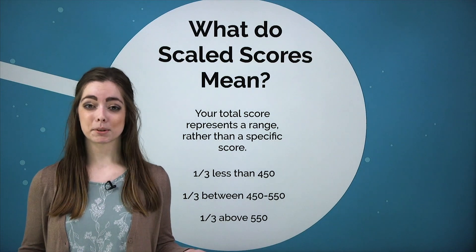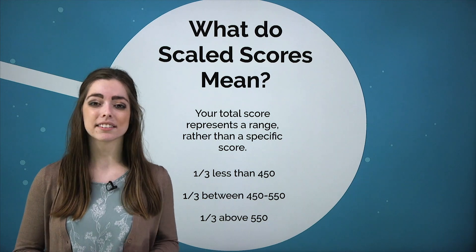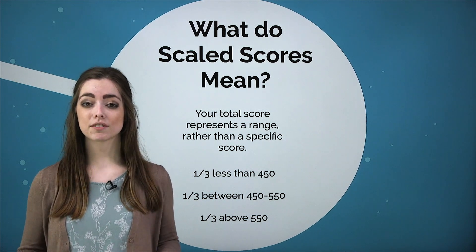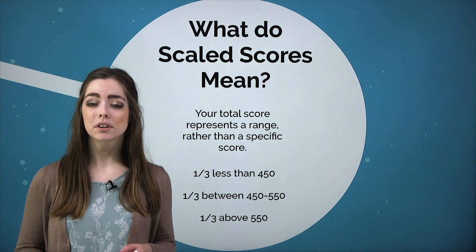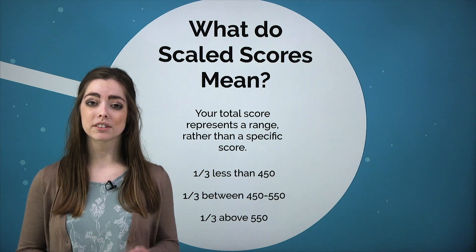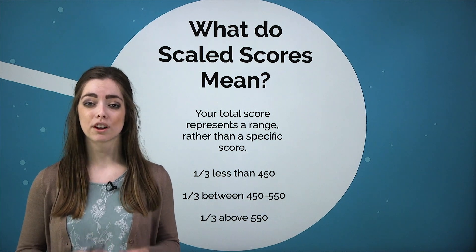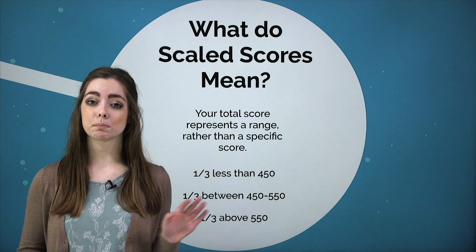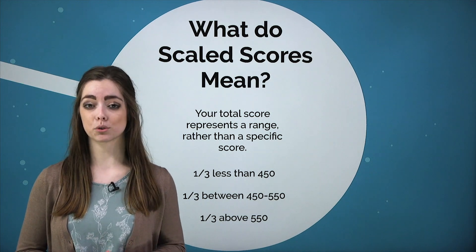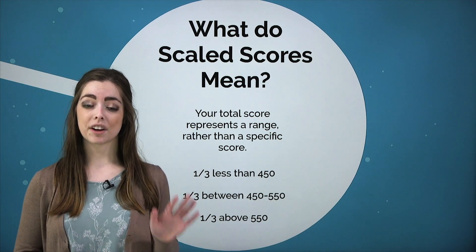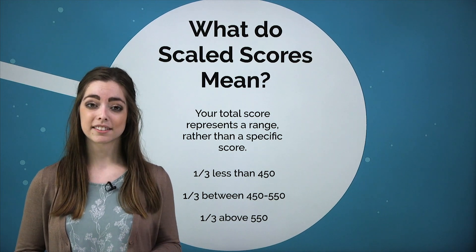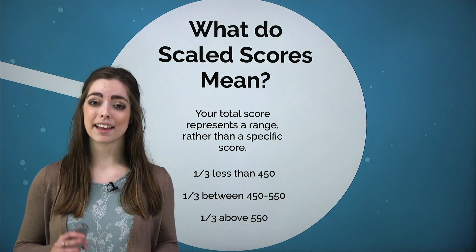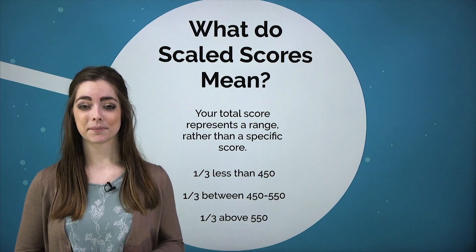So what do all these numbers mean? Students and parents constantly get frustrated trying to figure out these scores. First of all, it's important to note that your total score represents a range of scores rather than just a specific grade. Your score range is plus or minus 40 points of your total score. So if you score a 550 on the test, it is really saying that you would score between 510 and 590 on any given test day.